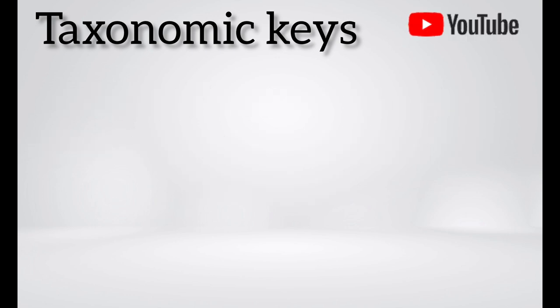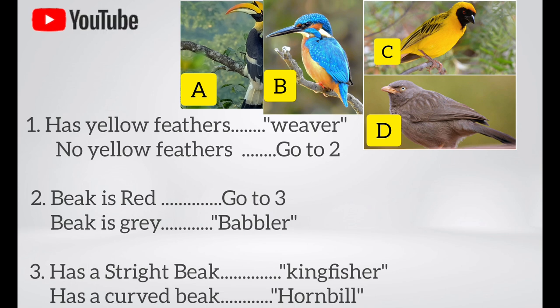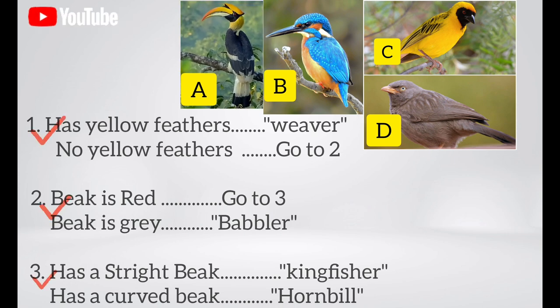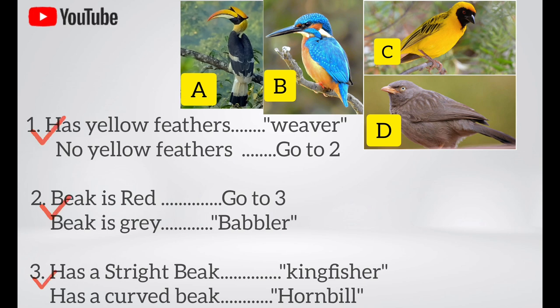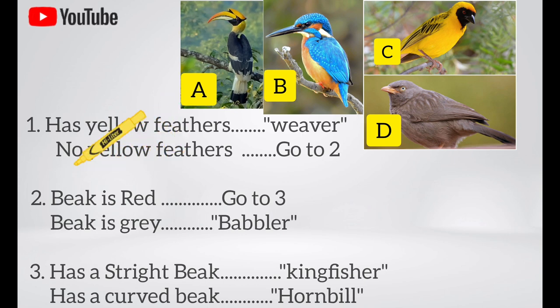For example, four different species of birds are given, and we will identify each one by using a couplet key. We need to follow the statements below to identify the name of each bird. Looking at bird A: the first statement asks whether it has yellow feathers — if yes, it is a weaver bird.